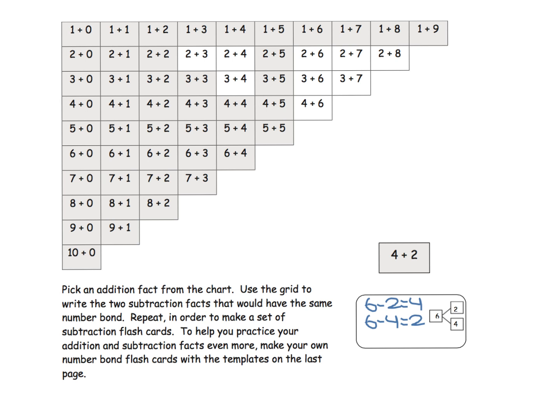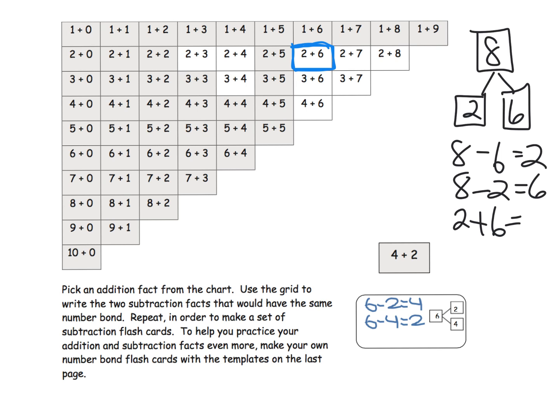Here, we're going to take an addition card. Let's say two plus six. The idea is we want students to say, okay, that's eight, and two and six. So there is our number bond. From that number bond, we want students to create all of the members of that fact family. The directions say focus on the subtraction, so that would be eight minus six is two, eight minus two is six. But parents and teachers, I would go ahead and put in the two addition members of our fact family.